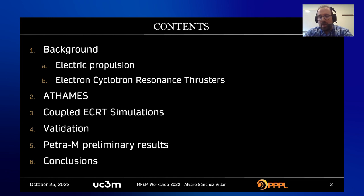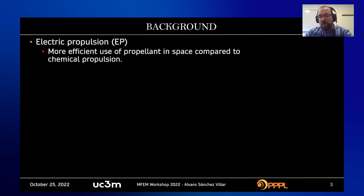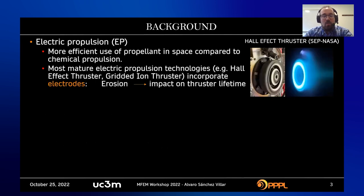Electric propulsion is an alternative to conventional propulsion systems — a different type of technology for providing propulsive means in space, which makes more efficient use of the propellant you carry into space. The most mature technologies, for instance the Hall effect thruster or the ion thruster, exploit the use of electrodes, which are erosion-prone components that suffer a lot from erosion, and this can significantly impact thruster lifetime.